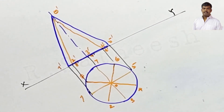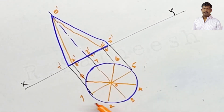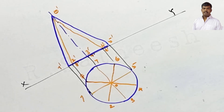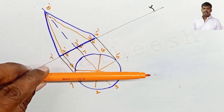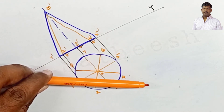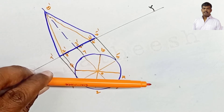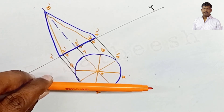This completes the cone projection: the top view is the circle and the front view is the triangle. Next, we proceed to section of solids. The given solid is cut by a sectional plane that is perpendicular to HP and inclined 45 degrees to VP.